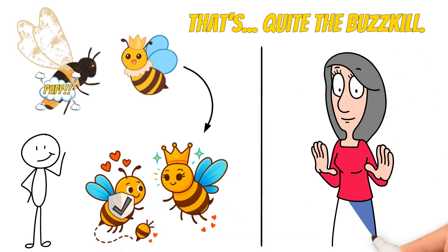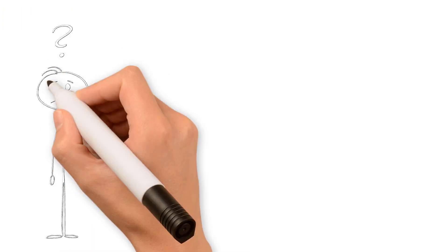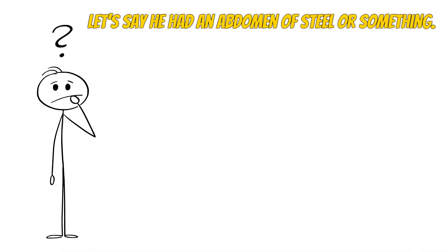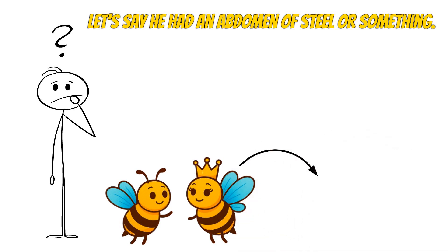But hold on, what if the queen's first mate didn't die? Let's say he had an abdomen of steel or something. Could he hang around with the queen and finally become a king bee?